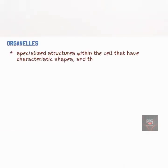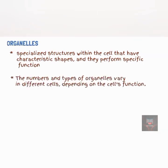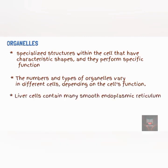Organelles are specialized structures within the cell that have characteristic shapes and perform specific functions. The number and type of organelles vary in different cells depending on the functions of the cells. For example, liver cells contain many smooth endoplasmic reticulum that help in detoxification of toxic substances, while muscle cells contain many mitochondria that supply energy during muscular contraction.